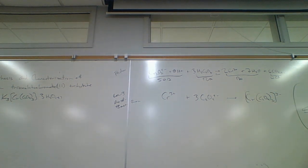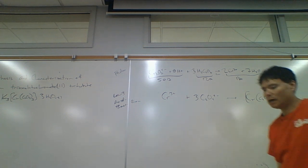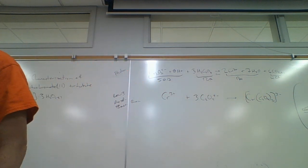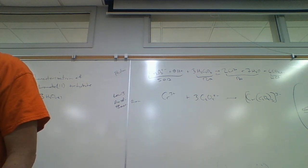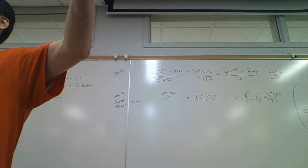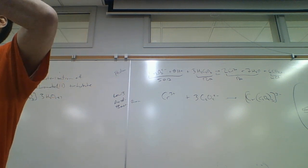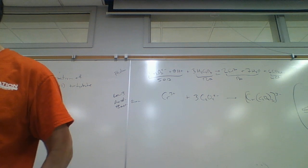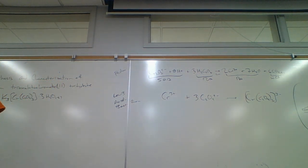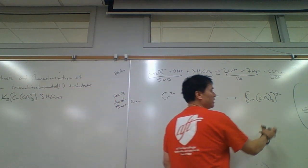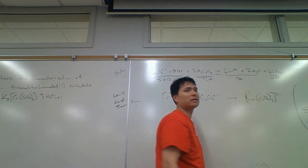Now what I want to do is I want to precipitate this out. It's a 3⁻ ion. 3⁻ is a high charge, and high-charged ions are usually pretty insoluble. But the problem with this one is it's so big — the 3⁻ charge is kind of spread out and it's not concentrated. But I'm going to look for a cation to precipitate this out.